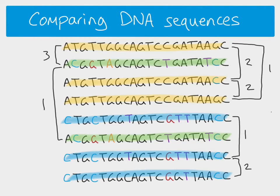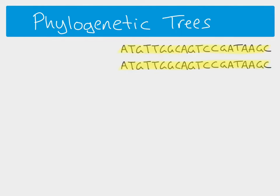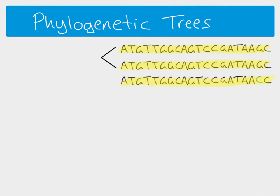Phylogenetics is the study of evolutionary relationships between organisms. A phylogenetic tree is a diagram showing those evolutionary relationships based on DNA sequences. Here are our first organisms — we saw that two of them have identical sequences, so they are very closely related and share a common ancestor. A third species is related to the other two but slightly less so, so we can link these together.